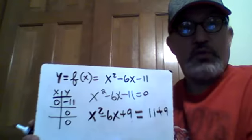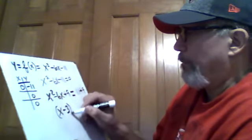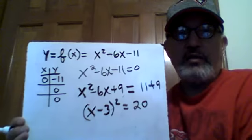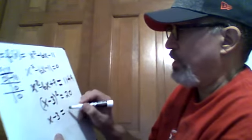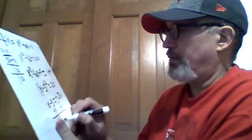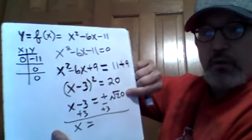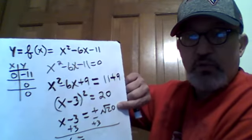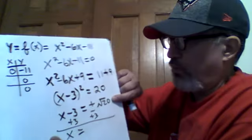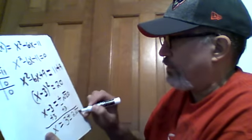Now, since we just created a perfect square trinomial, we can certainly factor it. This factors as x minus three squared. And the right side is 20. A number squared is 20, so that number is plus or minus the square root of 20. And the number is x minus three, so x minus three equals plus or minus the square root of 20. Adding three to each side, x equals three plus or minus the square root of 20. I'm going to simplify the square root of 20: it simplifies to two times the square root of five. So our two roots are three plus or minus two times the square root of five.